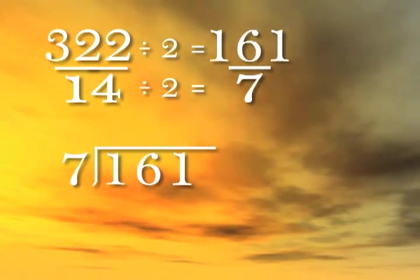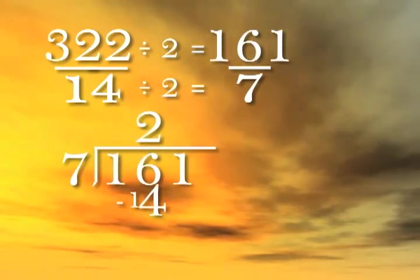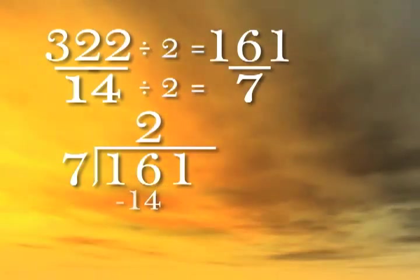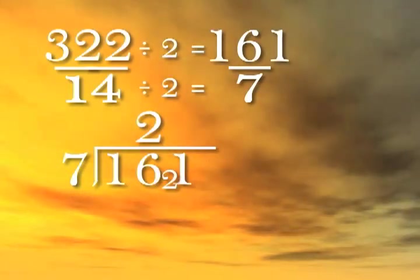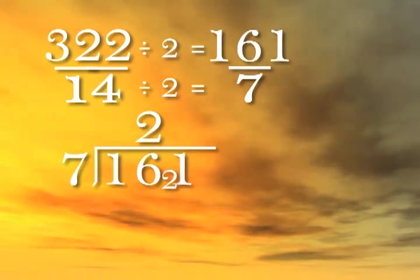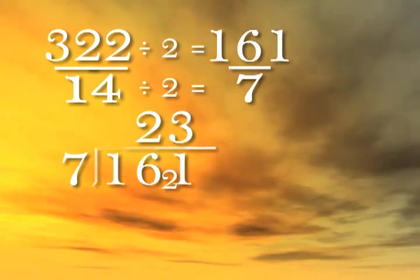Seven divides into 16 two times. The remainder is two, which gets prepended to the left of the one. Seven divides into 21 three times. So the answer is 23.